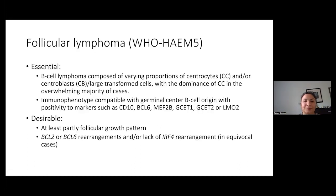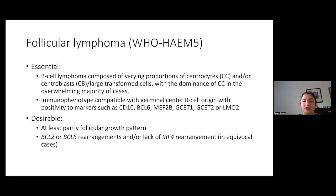In terms of the essential criteria in the WHO for follicular lymphoma: it's essential to be composed of varying proportions of centrocytes and/or centroblasts with the dominance of centrocytes in the overwhelming majority of cases. The immunophenotype is compatible with a germinal center B origin, with positivity for GCB markers. Desirable is that it should have at least a partly follicular growth pattern, and BCL2 or BCL6 rearrangements are seen, and/or the lack of IRF4 in equivocal cases.